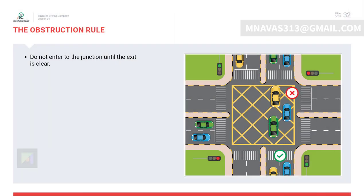The obstruction rule: if a car has stopped at a junction obstructing your way out, do not enter. In congested areas, junctions are usually marked with yellow crisscross lines indicating that traffic frequently jams there. The obstruction rule applies at all sorts of junctions, intersections, roundabouts, and pedestrian crossings.